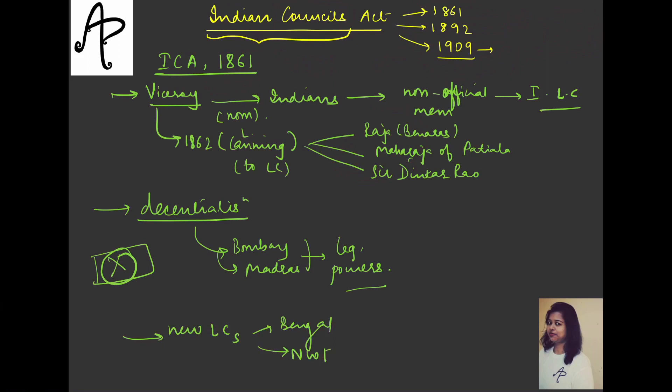Another thing is that new legislative councils also were established in Bengal, Northwest Frontier Province, and Punjab in different years like 1862, 1886, 1897. Just know that new legislative councils were established. A very important thing was that a new system was introduced here, which is the portfolio system.